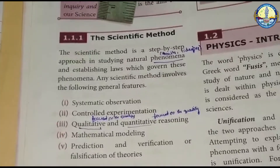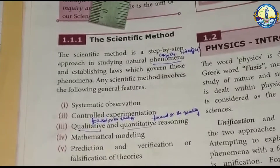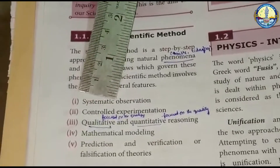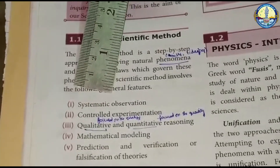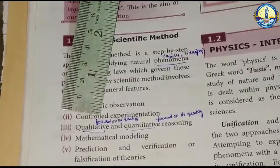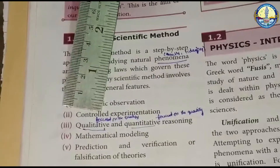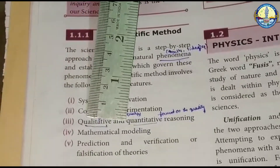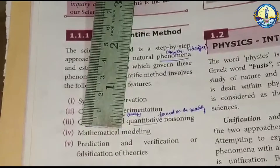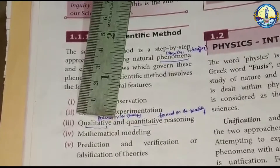The next topic is the scientific method. The general features of the scientific method are: first, systematic observation; second, controlled experimentation; third, qualitative and quantitative reasoning — qualitative is quality-based while quantitative involves numerical reasoning; fourth, mathematical reasoning using science and mathematical formulas; and fifth, prediction and verification or falsification of theories — a theory is developed, predictions are made, and it is verified whether the theory holds.